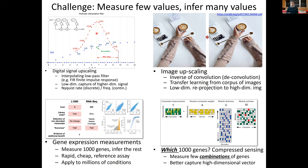The typical approach in digital signal processing is an interpolating low-pass filter that creates finite impulse responses and captures a lower-dimensional representation of this high-dimensional signal, enabling inference of intermediate positions. This is theoretically bounded by the Nyquist rate in the discrete domain or the Nyquist frequency in the continuous domain.